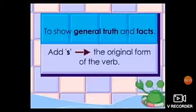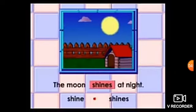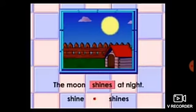Now, for telling general truth and facts, we add S to the original form of the verb. For example: the moon shines at night — shine plus S. جب ہم کوئی general truth یا fact بتا رہے ہیں — fact ایک حقیقت ہے جو change نہیں ہو سکتی — that the moon shines at night. ہم نے shine کے ساتھ S لگا دیا کیونکہ moon ایک singular ہے اور ہم general truth بتا رہے ہیں۔